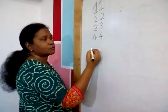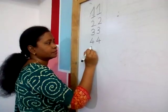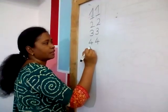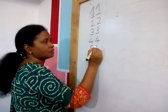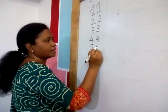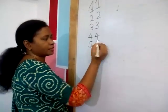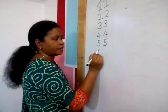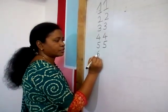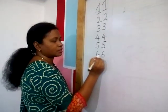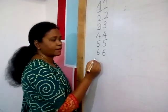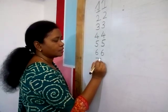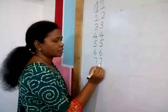After 4 comes 5 — standing line, make a curve and sleeping line. Standing line, make a curve and sleeping line. After 5 comes 6 — make 1 curve and join it. Next comes 7 — sleeping line, slanting line. Sleeping line, slanting line.